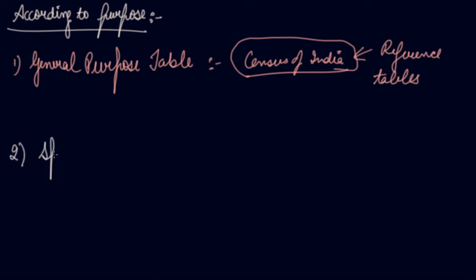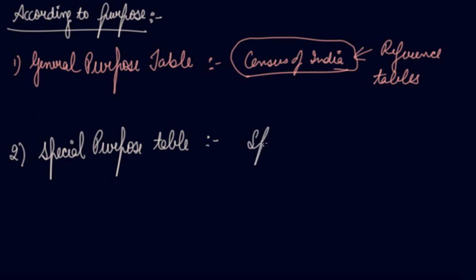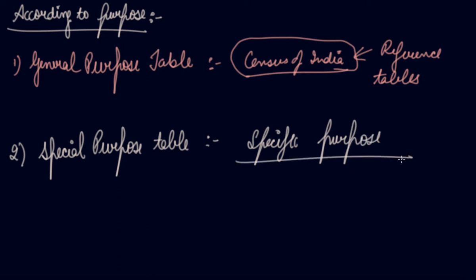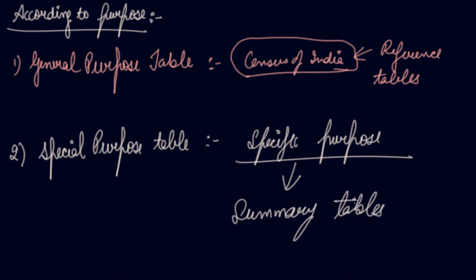The second kind is your special purpose table. The special purpose table is that table which is prepared with some specific purpose in mind. Generally, these are small tables limited to the problem under consideration, and these are also known as summary tables. For example, the profit and loss of the iron and steel industry over the past 10 years — in this there is a specific purpose, so the table is also known as a summary table.